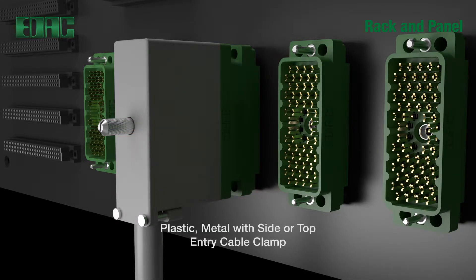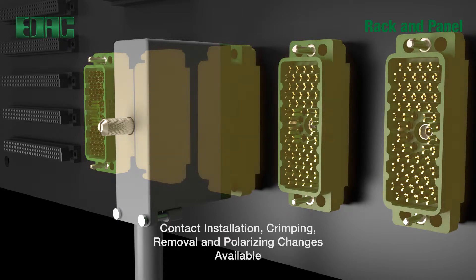Optional covers are available in plastic or metal with side or top entry cable clamp. Polarizing hardware is available and adjustable for 288 mating combinations.